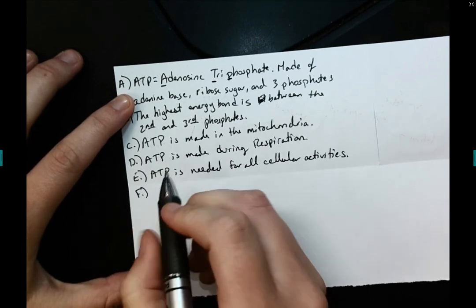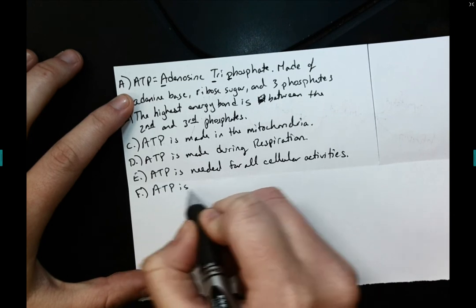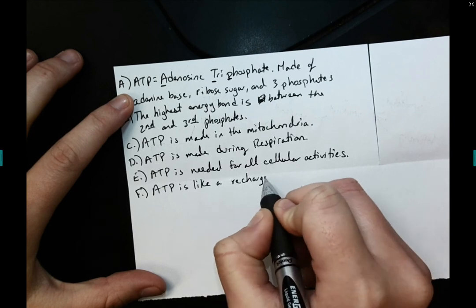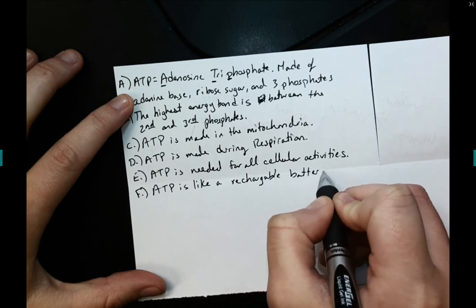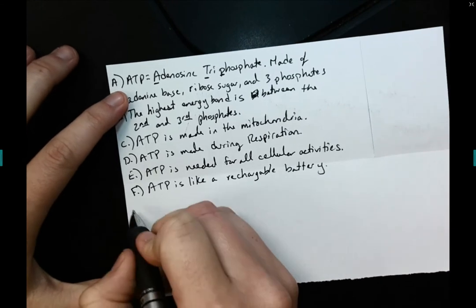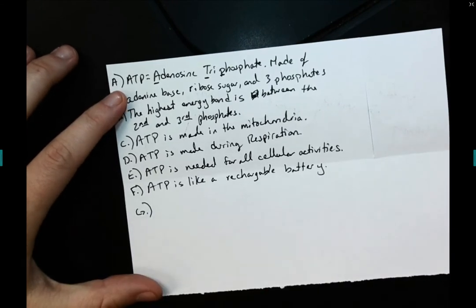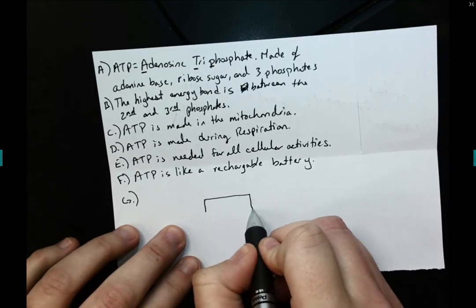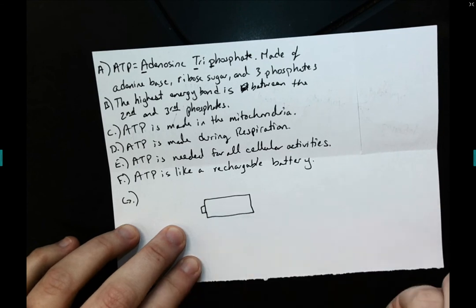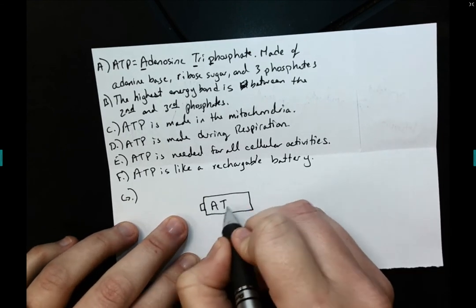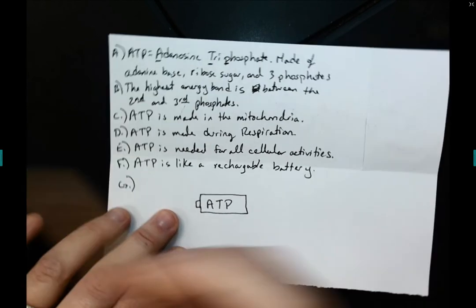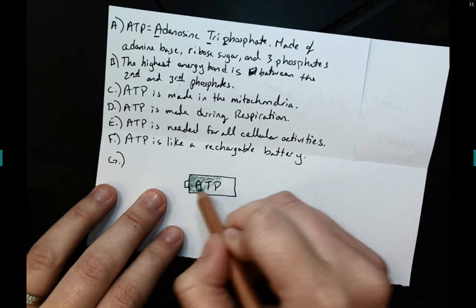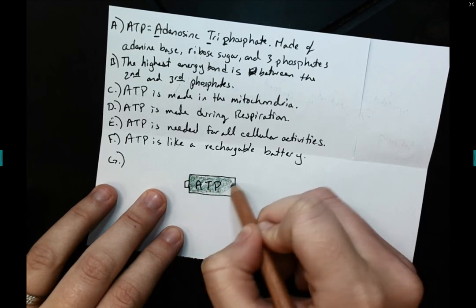And then finally, an analogy to help us remember ATP. So ATP is like a rechargeable battery. So how is ATP made? Well, just like a rechargeable battery, in the beginning I start fully charged. So here's my battery, fully charged with ATP.